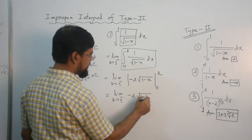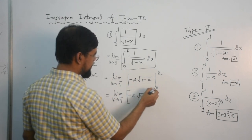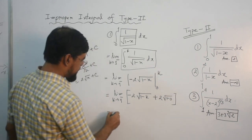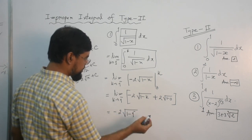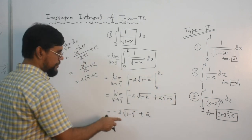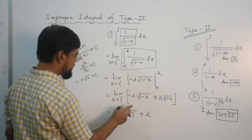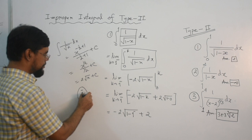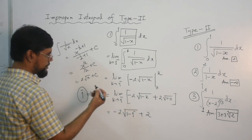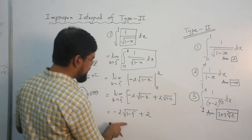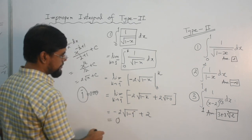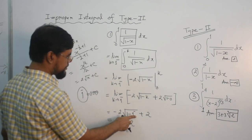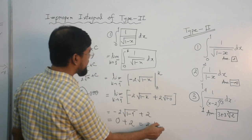This equals limit k → 1⁻ of [−2√(1−k)] minus [−2√(1−0)], which gives −2√(1−k) + 2√1. Now 1⁻ means a number approximate to 1, like 0.999..., so 1 minus 1⁻ ≈ 0. Therefore the result is 0 + 2 = 2. This integral converges to 2.